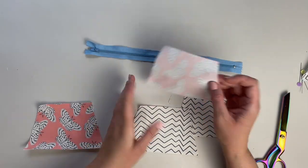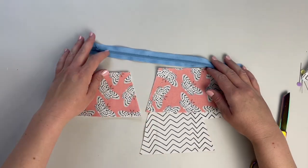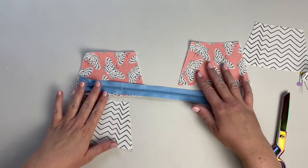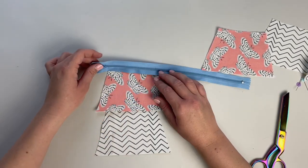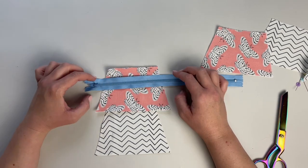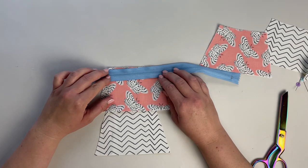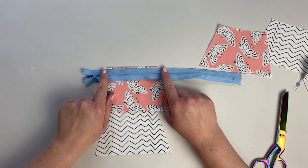Now that our interfacing is fused to the back of the main fabric, we are going to use the zipper. You're going to need one main, one lining, and the zipper. What we're going to do is put the zipper face down, zipper side down onto the main fabric at the top, and line it up with the top of the main fabric.